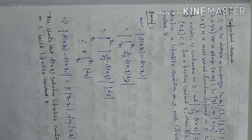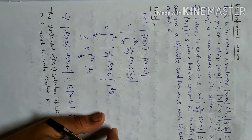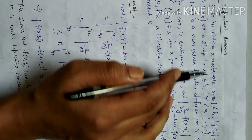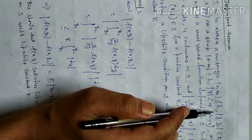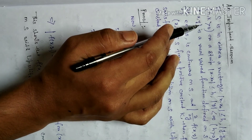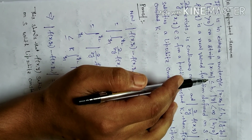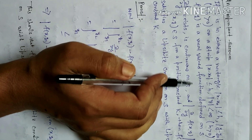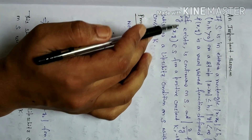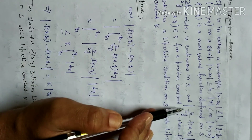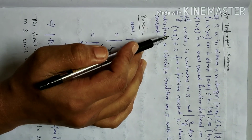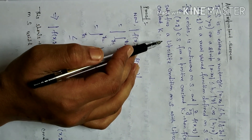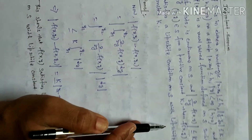Now I am discussing an important theorem on Picard's existence and uniqueness theorem. If S is either a rectangle |x − x₀| ≤ h, |y − y₁| ≤ k (h, k both positive) or a strip |x − x₀| ≤ h with |y| < ∞ (h positive), and if f(x, y) is a real-valued function defined on S such that ∂f/∂y exists, is continuous on S, and |∂f/∂y| ≤ k for all (x, y) in S for a positive constant k, then f(x, y) satisfies a Lipschitz condition on S with Lipschitz constant k.